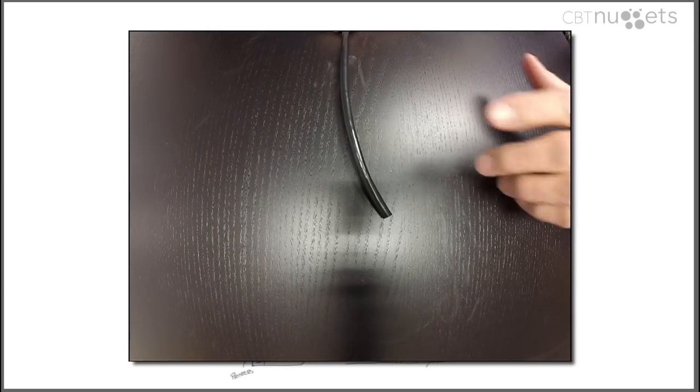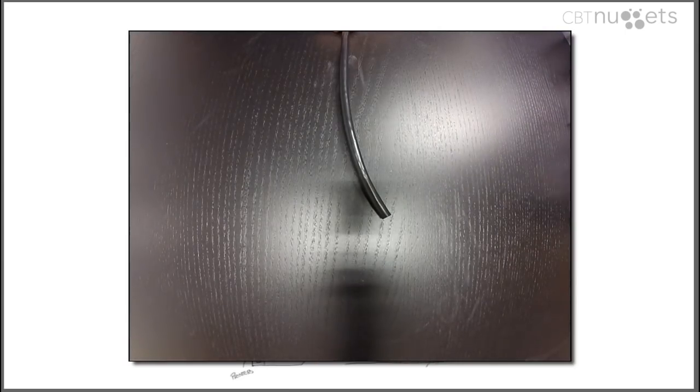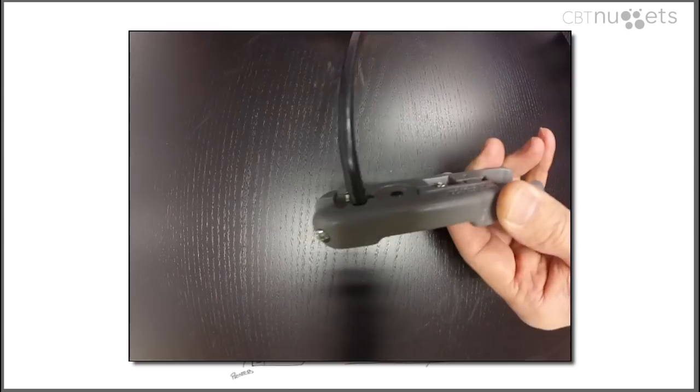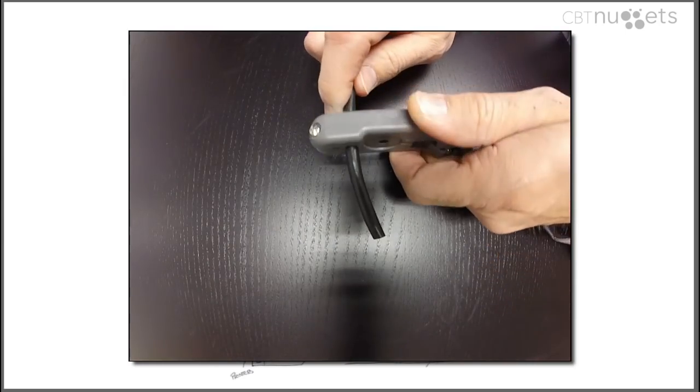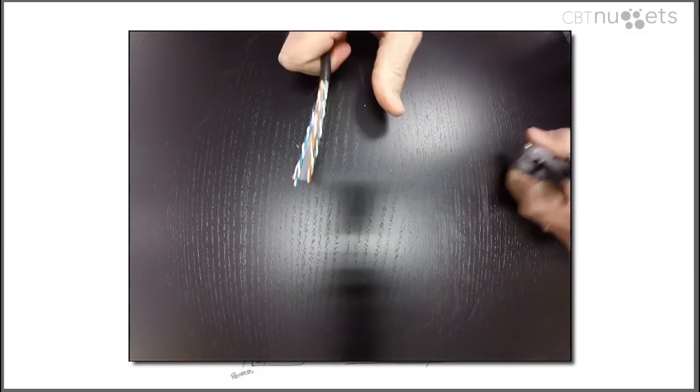When you're crimping an end on the cable, the first thing you want to do is strip off enough of this shielding so that you can get to the internal wires and they're easy to work with. For me, that's about two to three inches. I'll take my cable stripper, put it on there right about there, twist that cable around, and pull it off.